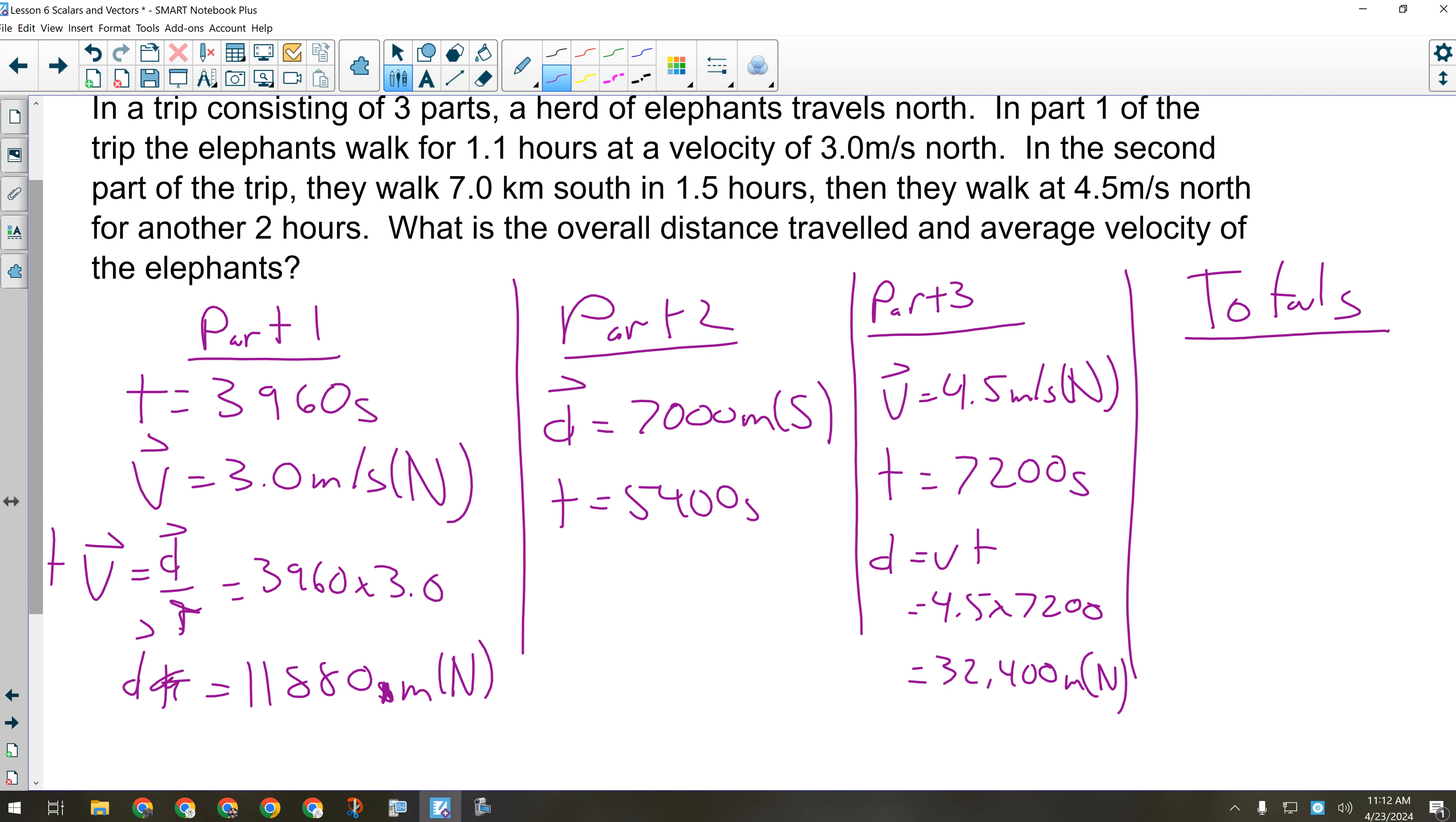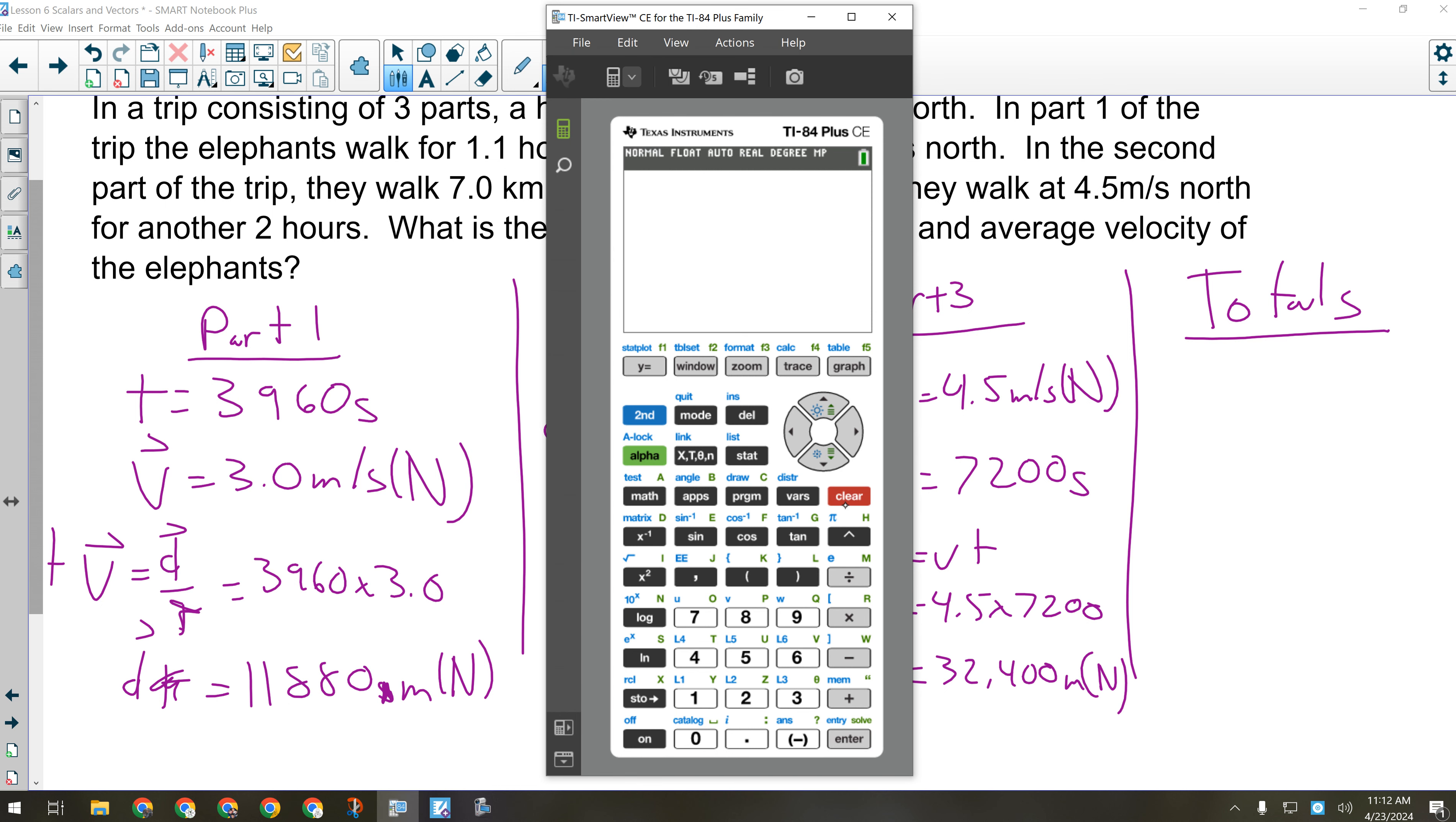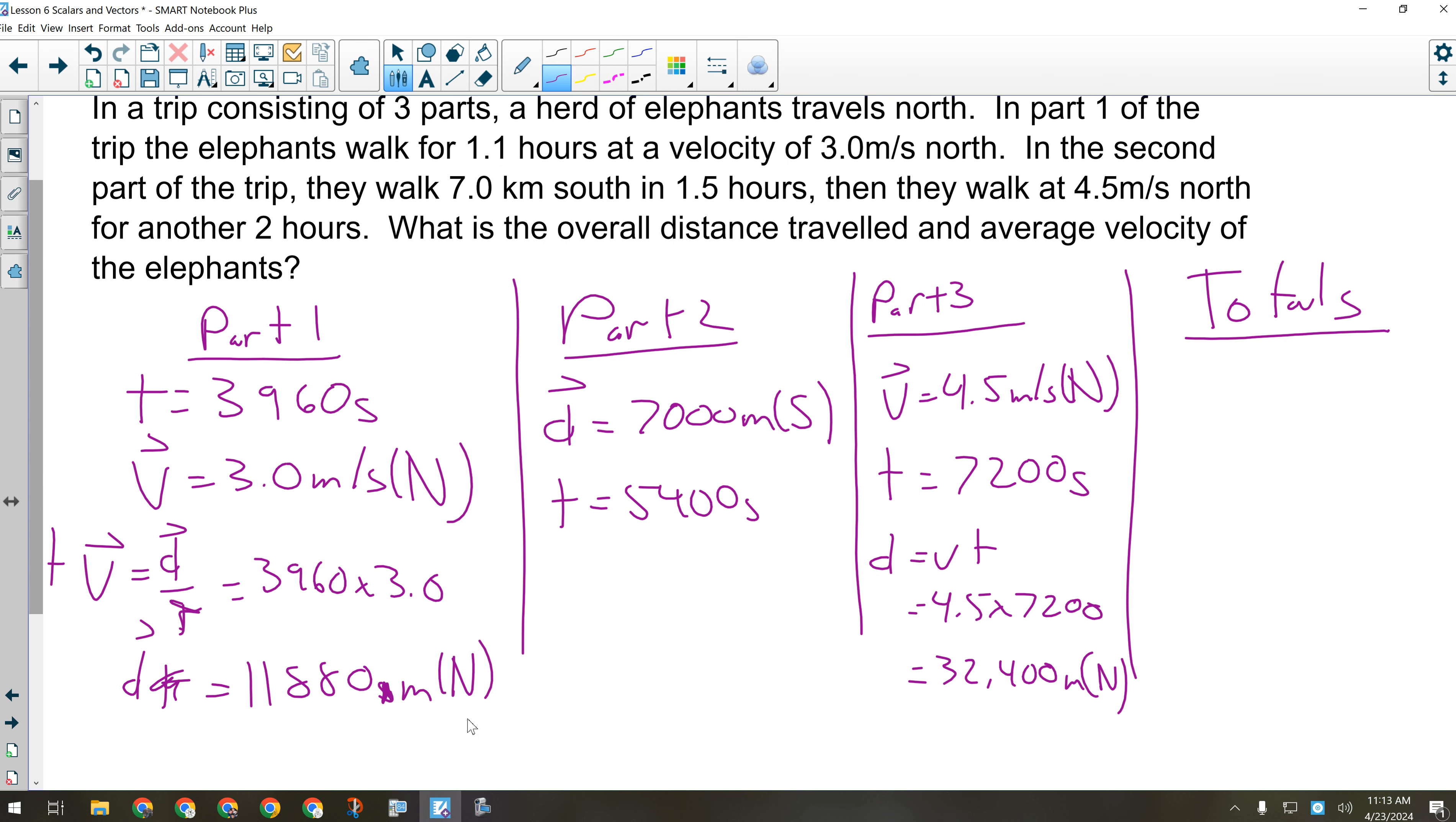I know how far the elephants walked and in what direction in each section of this total trip. So if I want to get the total distance, what do I do with those numbers? Just add them. And I don't care which direction they're going. This just wants to know how far do the elephants walk. So we're just going to add up the displacements, but we're going to ignore their directions. So we will have 11,880 plus 7,000 plus 32,400. They got their steps in. They walked 51.28 kilometers on this trip. That's a lot. So that would be our total distance. 51,280 meters, because distance is just how far do they go. It doesn't care which direction or where they end up at the end.